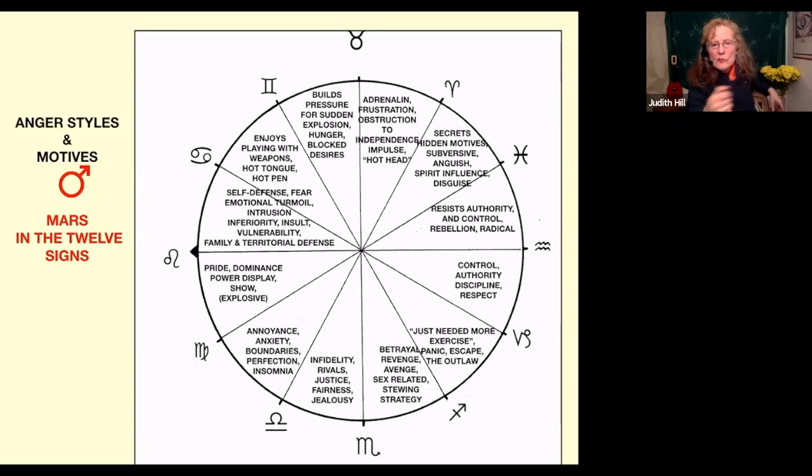Mars in Sag, they just needed more exercise, panicking, escaping, the outlaw. Often they've been playing around doing something they shouldn't and they'll have a temper tantrum as a disguise, a big smoke screen, and then escape out the back door.